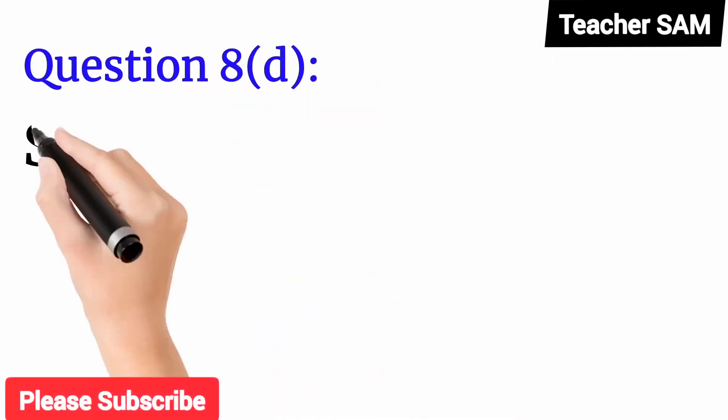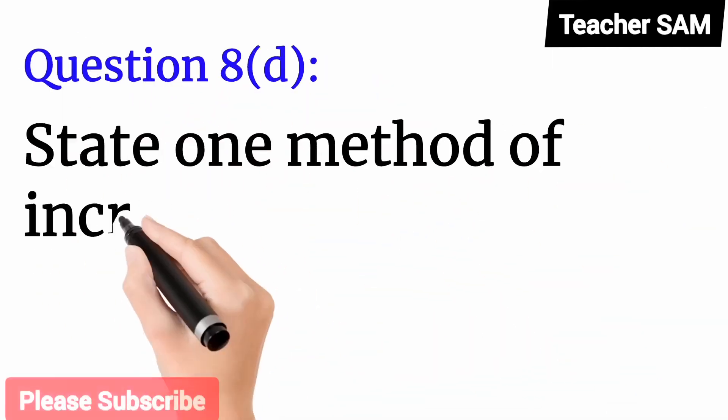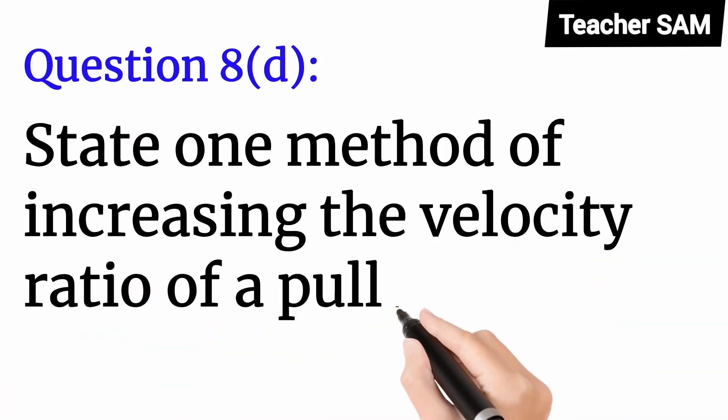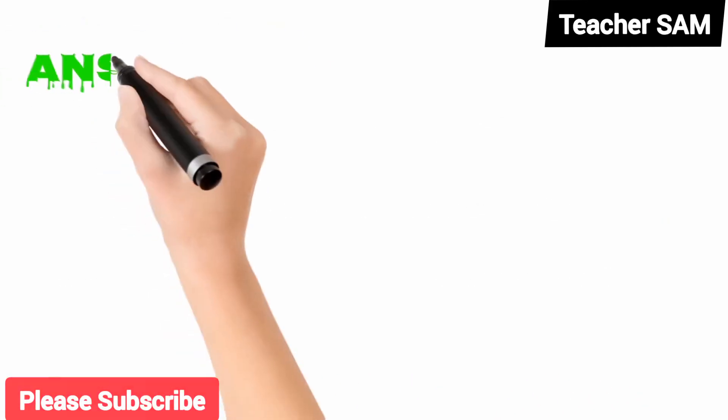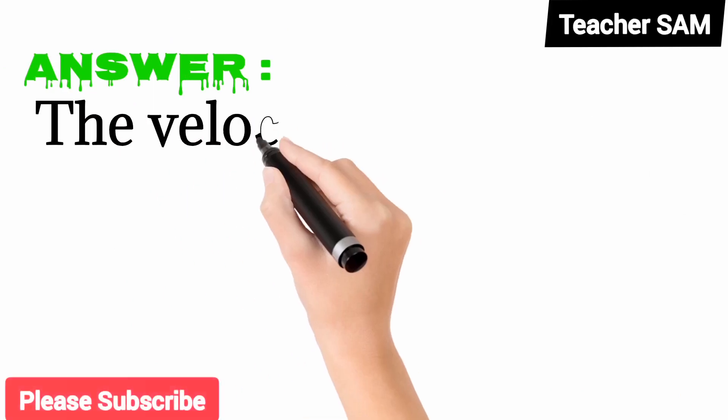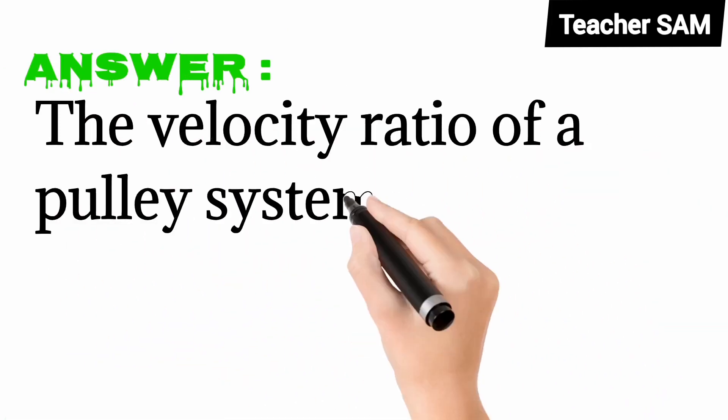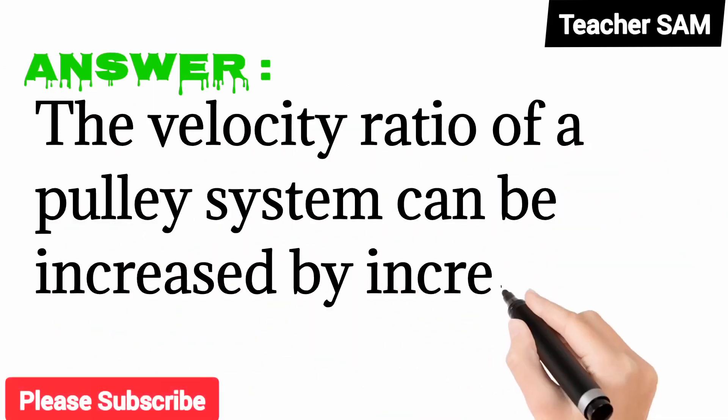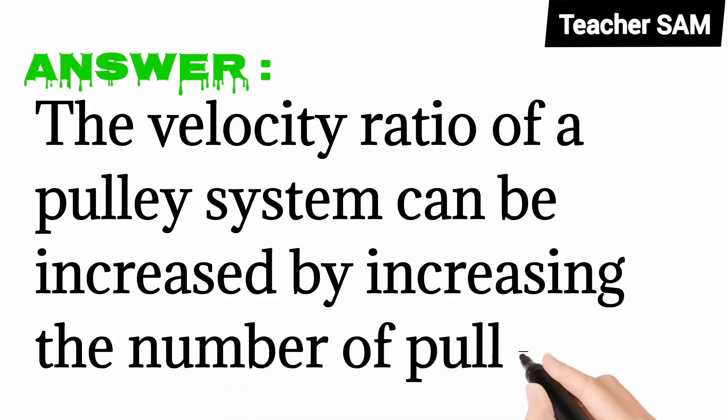Question 8(d): State 1 method of increasing the velocity ratio of a pulley system. Answer: The velocity ratio of a pulley system can be increased by increasing the number of pulleys.